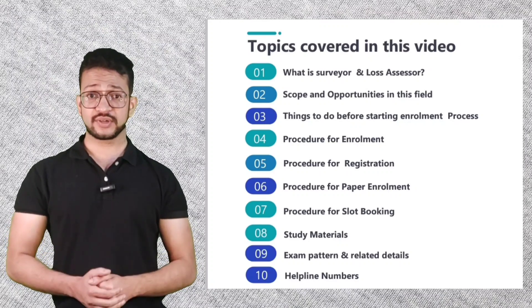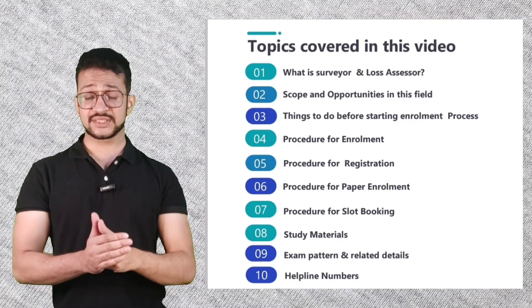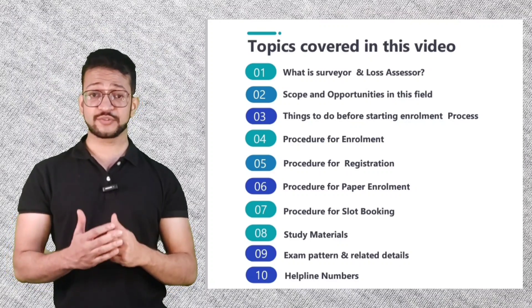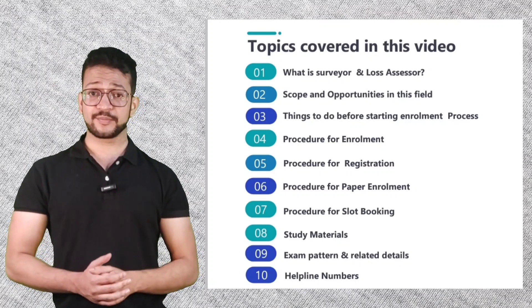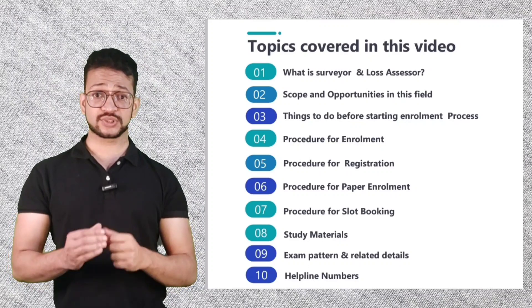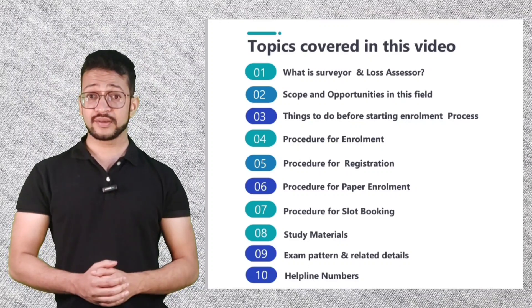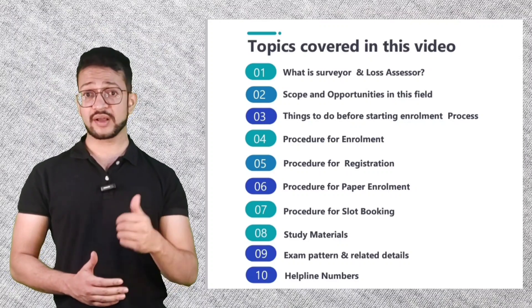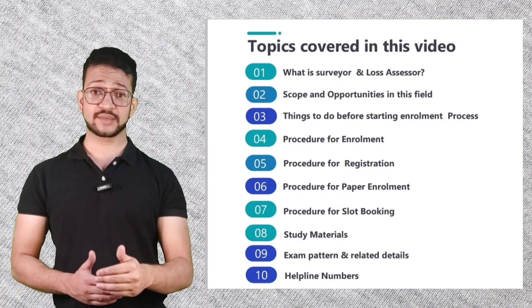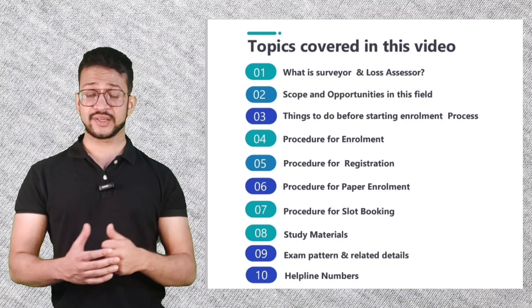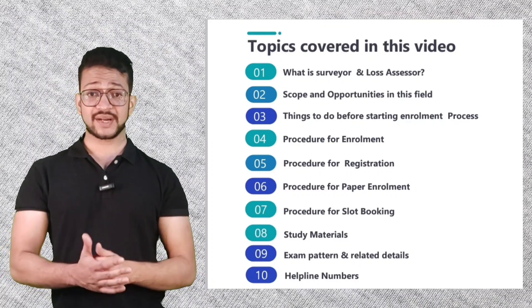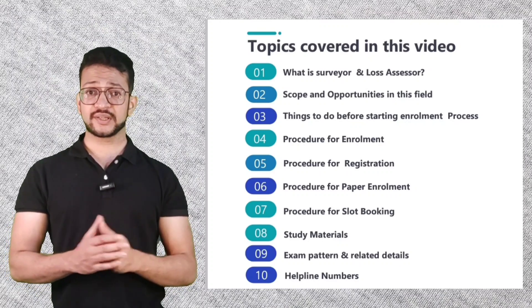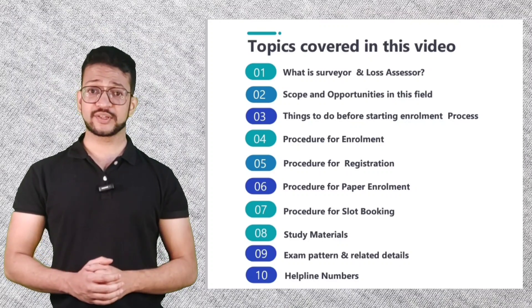Number five, what is the procedure for registration; number six, what is the procedure for paper enrollment; number seven, what is the procedure for slot booking; number eight, study materials which you would need to study in this examination; and number nine, examination pattern and other details related to the examination.